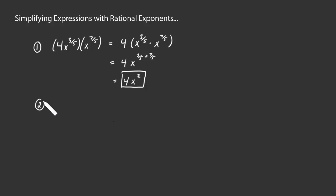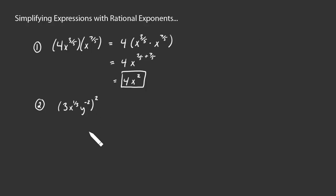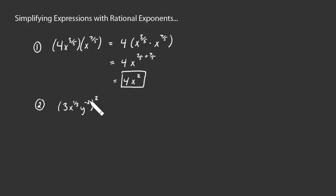Second example: suppose we have the power 3x to the 1 third times y to the negative 2, all raised to the second power. Remember that exponents distribute over a product, so if everything inside the parentheses is being multiplied together, we can bring this exponent in on each one of those factors.